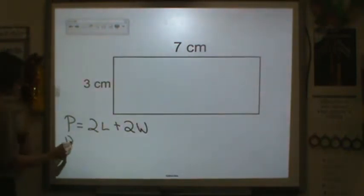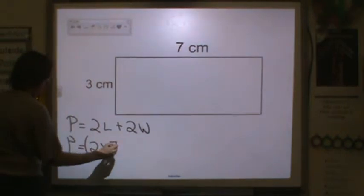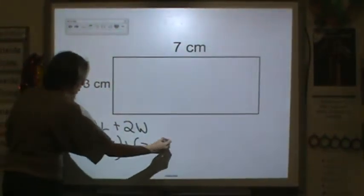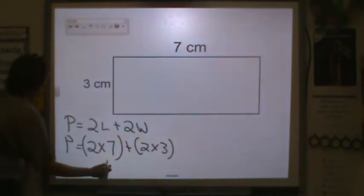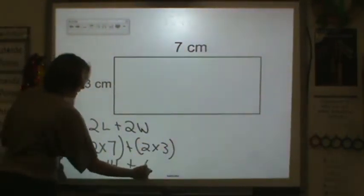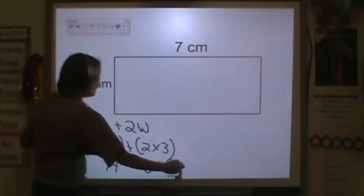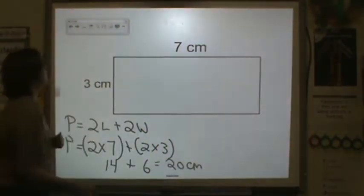So, in this particular problem, my perimeter is equal to 2 times 7, because that's my length, plus 2 times 3. 2 times 7 is 14, plus 2 times 3 is 6. 14 plus 6 is 20. And we're working in centimeters, so it is 20 centimeters.